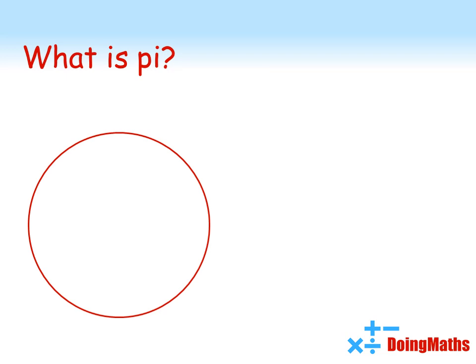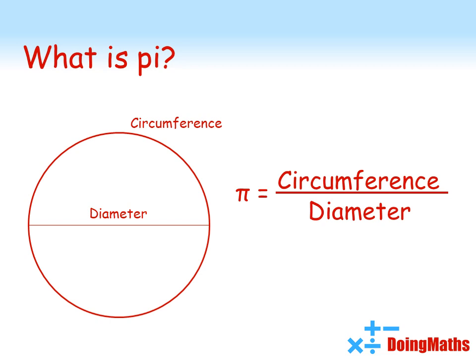If we take a circle, the circumference of the circle is the distance all the way around the edge of the circle. The diameter is the length of the line from side to side passing through the center of the circle. Pi is defined as the circumference divided by the diameter, which gives us this number here, 3.14 and so on.